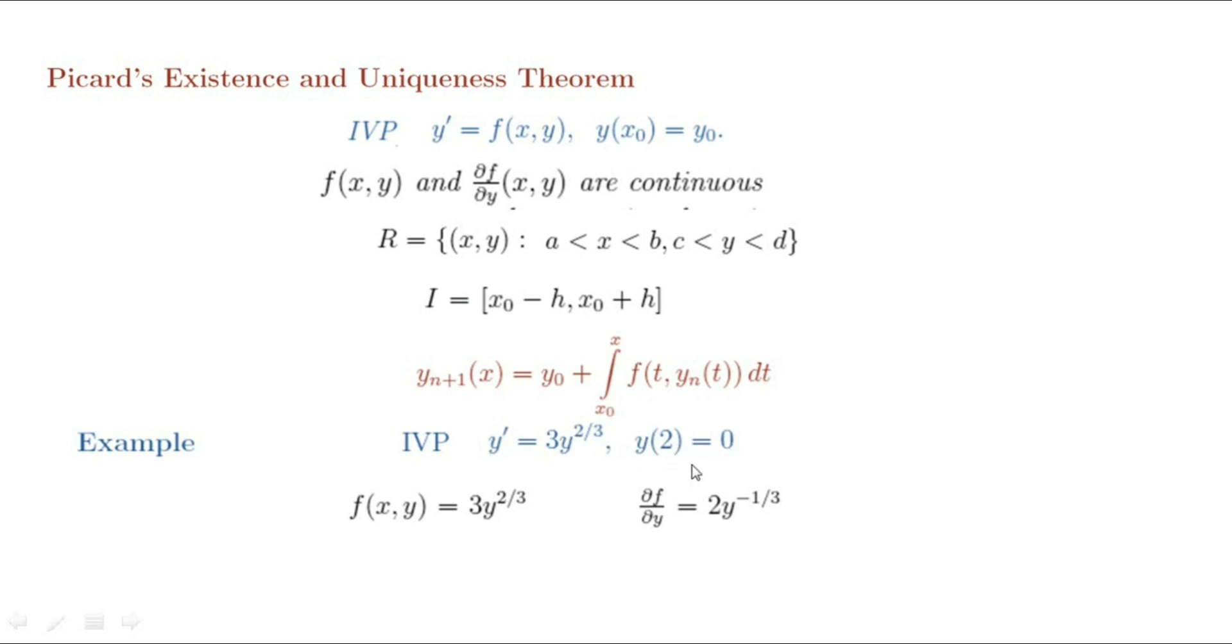One is the non-trivial solution, second one trivial solution. y^(1/3) equals x minus 2 is a non-trivial solution. y equals 0 is a trivial solution.